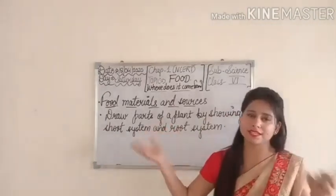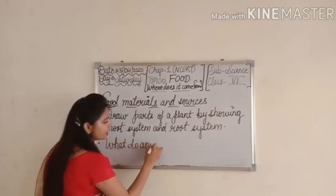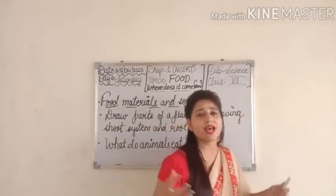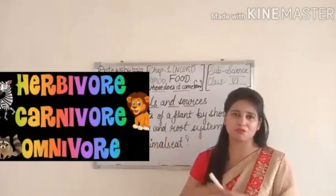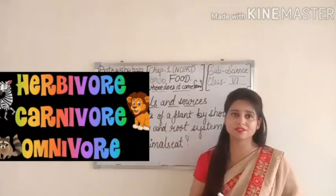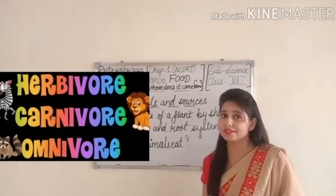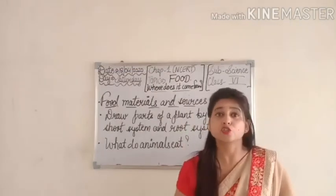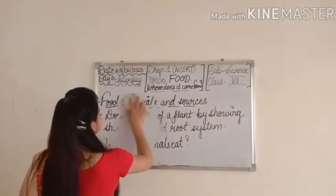The next part is: What Do Animals Eat? As we all know, animals are categorized into three main groups: carnivores, herbivores, and omnivores. Herbivores are plant-eating animals, carnivores are flesh-eating animals, and omnivores eat both plants and flesh.